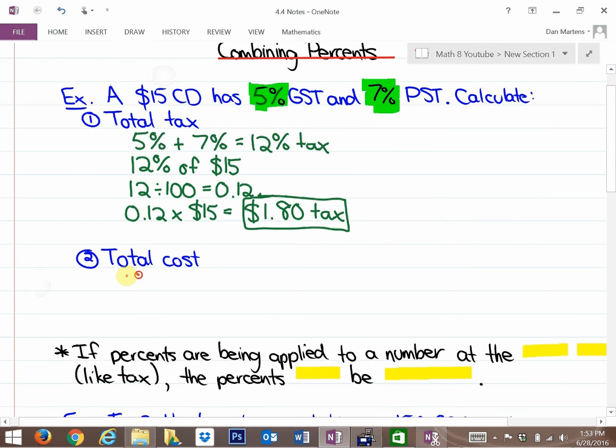So the total cost of this CD is going to be the $15 CD plus the $1.80 tax, which gives us a total cost of $16.80, which again makes sense. A $15 CD plus 12% tax is $16.80.